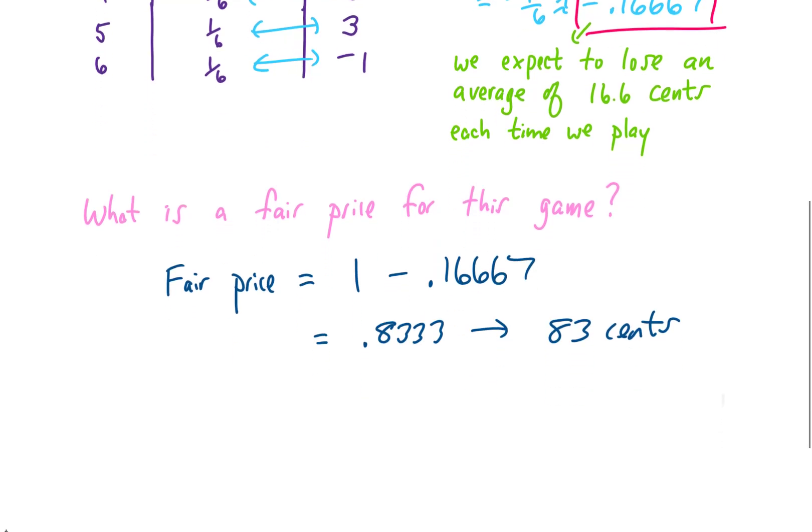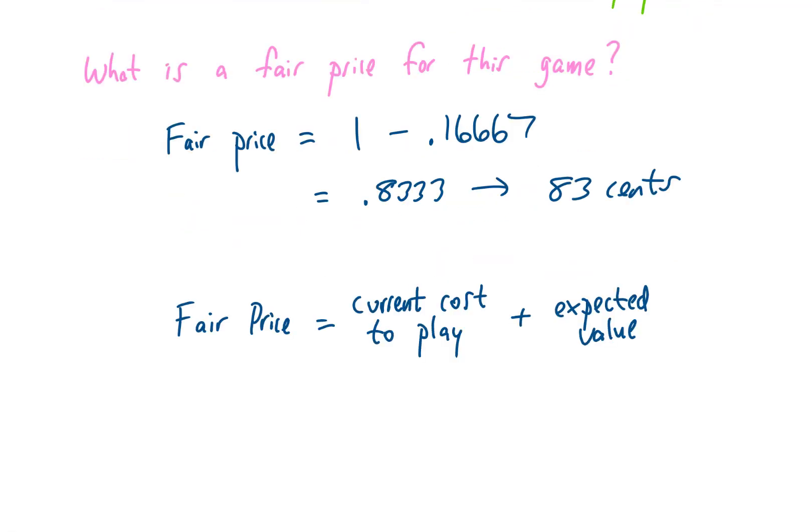And in general, the fair price for a game can be given by this formula. We just take the current cost to play the game, add onto that the expected value, and you get yourself the fair price for playing that game.